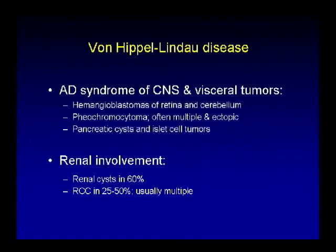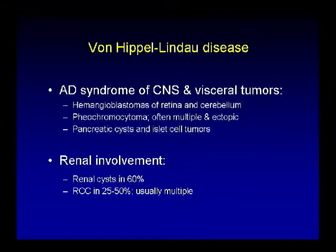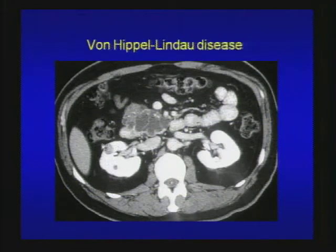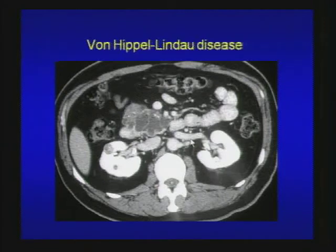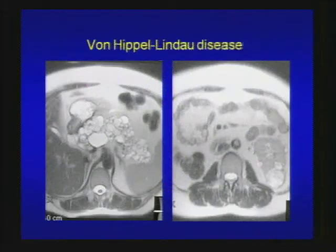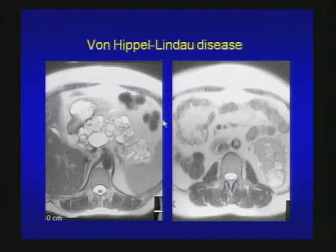Von Hippel-Lindau disease is another autosomal dominant syndrome of CNS and visceral tumors. It consists of hemangioblastomas of the retina and cerebellum, pheochromocytomas which are often multiple and ectopic, pancreatic cysts, and islet cell tumors. In terms of renal involvement, renal cysts are frequently seen, but more importantly renal cell carcinoma occurs in 25% to 50% and is usually multiple. Here's a case of a solid enhancing right renal mass consistent with RCC and multiple cysts in the pancreas — Von Hippel-Lindau disease on oral boards. This is the answer to unknown case number two.